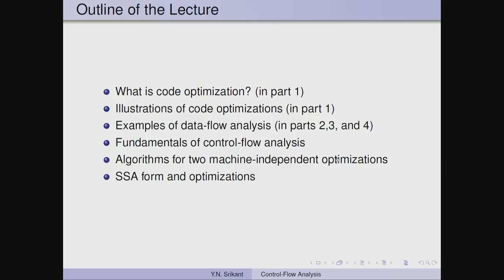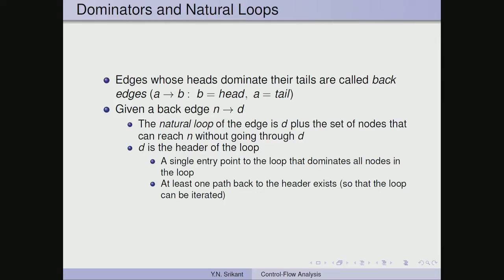Welcome to part 5 of the lecture on machine independent optimizations. Today we will continue our discussion on control flow analysis. We defined dominators in the last part and were discussing the natural loop structure defined by a back edge. Edges whose heads dominate their tails are called back edges — if there is an edge from a to b, b is the head and a is the tail. Given a back edge n to d, the natural loop of the edge is node d plus the set of nodes that can reach n without going through d again.